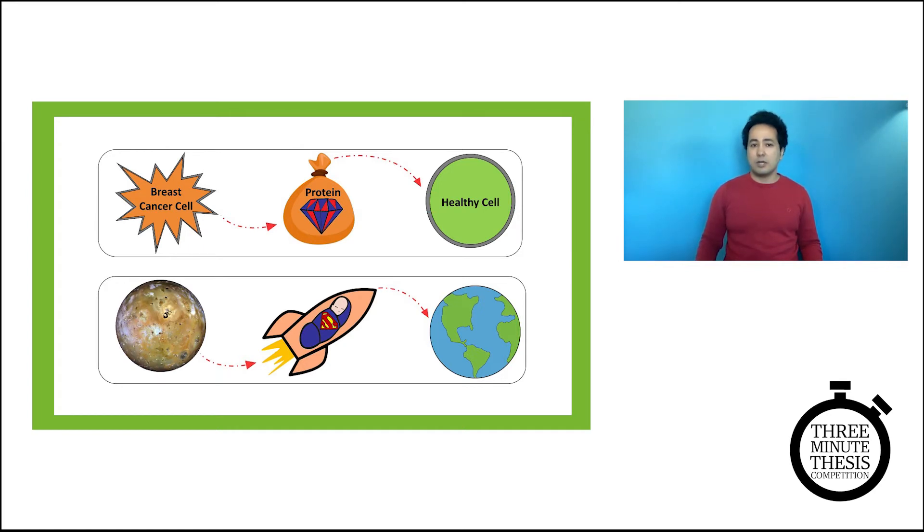Cancer cells do something similar. They put their most valuable protein inside very small pouches called vesicles and release them into blood for the sake of their own survival. Once in the blood, these vesicles will be taken up by healthy cells in our body.